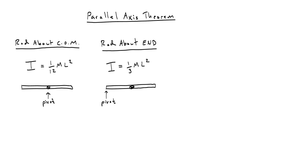In this video we're going to talk about the parallel axis theorem, which is an equation to find the moment of inertia when something is not rotating around its center of mass. We'll look at two situations: a rod rotating around its center of mass — like a propeller or a stick thrown in the air — versus a rod rotating about its end, like holding a baseball bat or the minute hand on a clock.